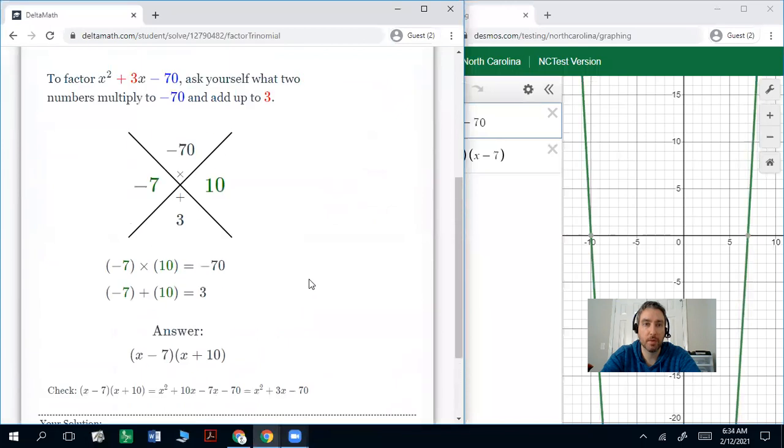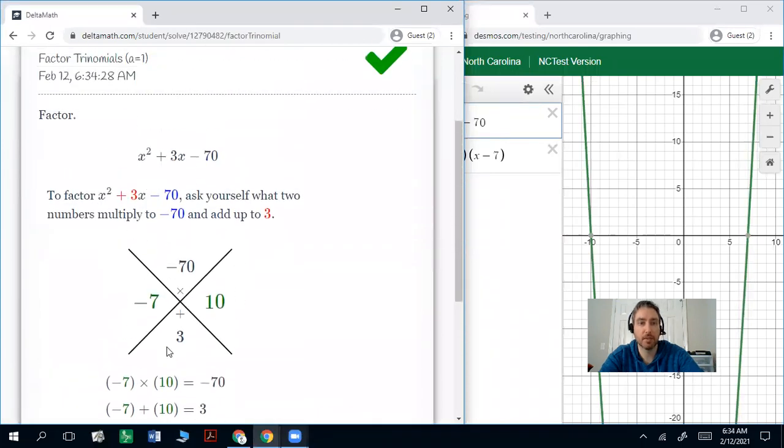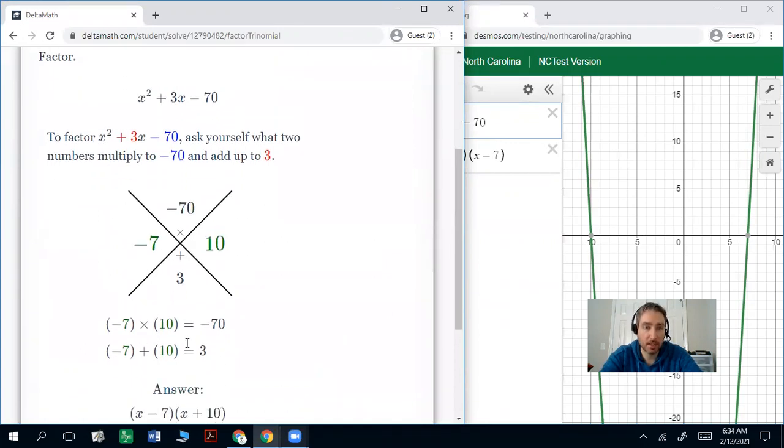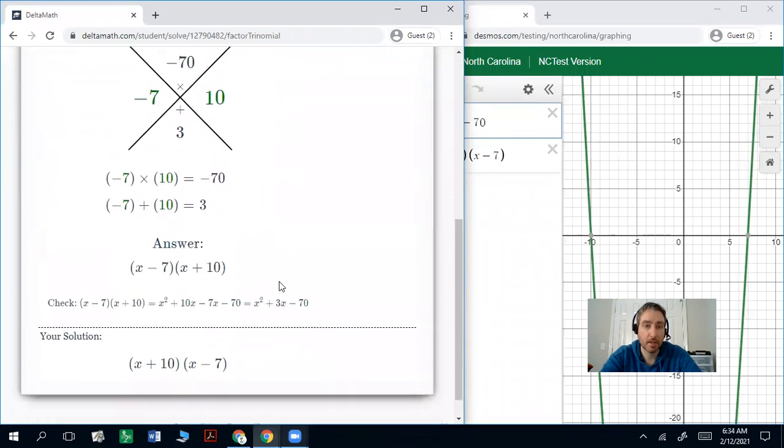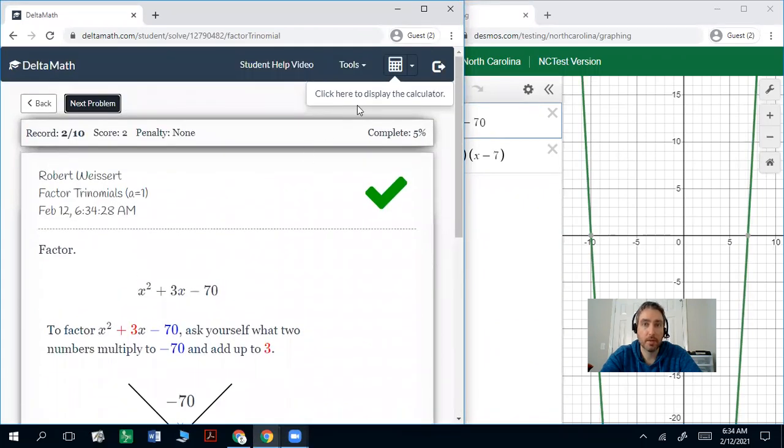So remember on that problem, the negative 7 and 10 must multiply to negative 70, which they do, and the negative 7 plus 10 will add to 3, which they also do. So that 3 there they add. So that's all for that skill.